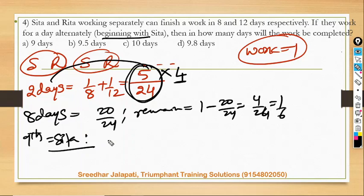Now on ninth day, according to the question, Sita comes to work. And when Sita comes to work on ninth day, work to be done is one by six, but the rate at which Sita works is one by eight, which is smaller than one by six. So therefore, even if Sita works for the entire day, she won't be able to complete the remaining.